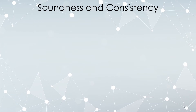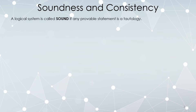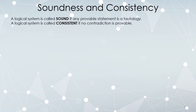Some important terms are soundness and consistency. Any logical system is sound if a statement that can be proved is always a tautology — meaning the only statements you can prove are tautologies. A system is consistent if it's not possible to prove a contradiction. These two notions are definitely related.